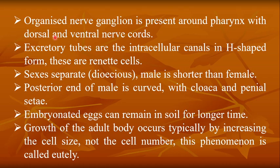An organized nerve ganglion is present around the pharynx with dorsal and ventral nerve cords. This is a new character completely absent in Platyhelminthes — a well-developed nervous system with ganglia and nerve cords is present here.